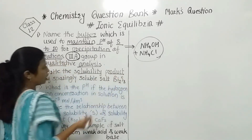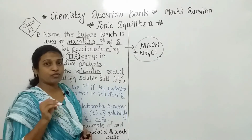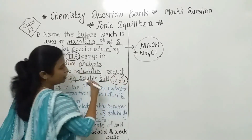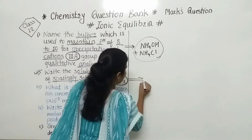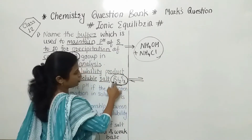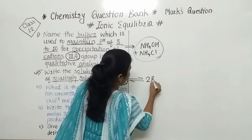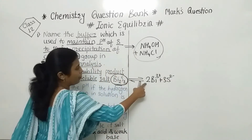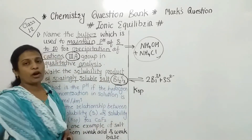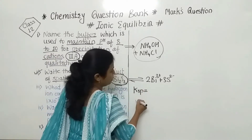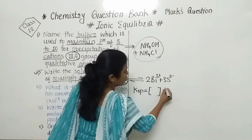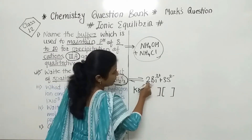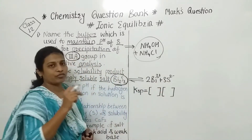We should know what the solubility product formula is and how to write it. The solubility product of sparingly soluble salt Bi₂S₃. Here, if we consider the ionization, first you have to write the reaction: Bi₂S₃ gives 2Bi³⁺ plus 3S²⁻. After that, we write the solubility product. That is denoted by the symbol Ksp, equal to the concentration of cation and concentration of anion, each raised to the power of their number of moles.